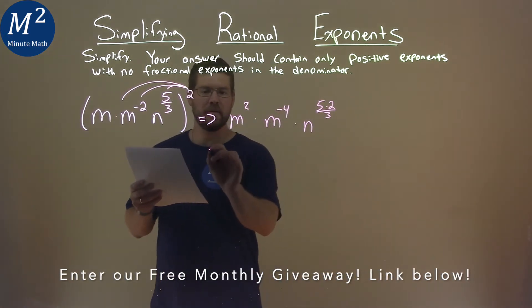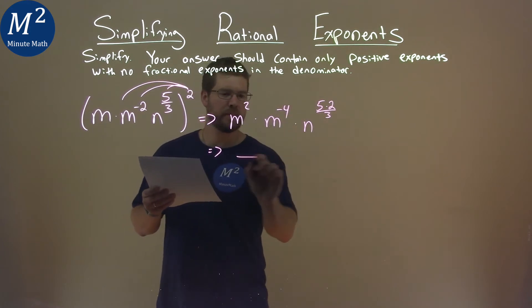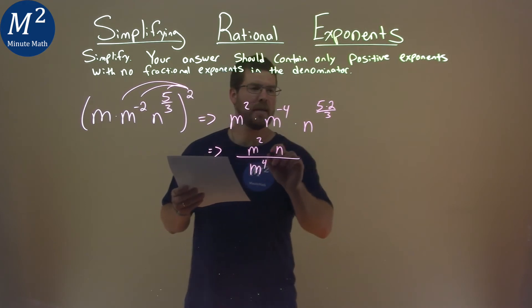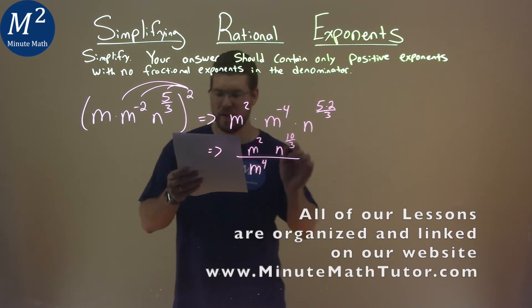Keep on simplifying here. m to the negative four goes to the denominator, so we have m squared over m to the fourth, and then we have n here being multiplied. Five times two is ten, so we have ten over three here.